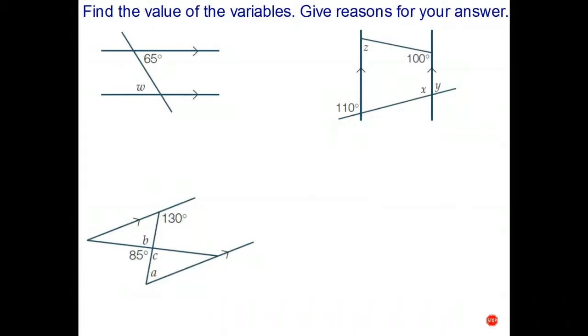First one, hopefully you found it to be fairly straightforward. That's the Z rule - two parallel lines cut by a transversal, alternate angles are equal. So therefore W is 65 degrees, and the reason is the Z rule.